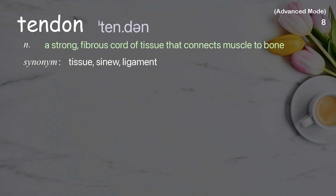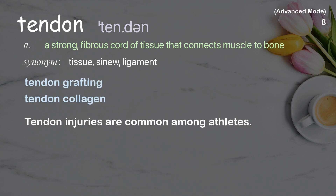Tendon: a strong, fibrous cord of tissue that connects muscle to bone. Examples: tendon grafting. Tendon injuries are common among athletes.